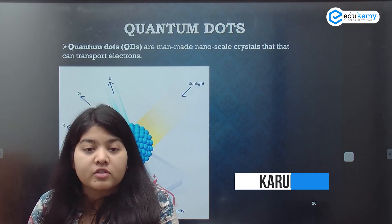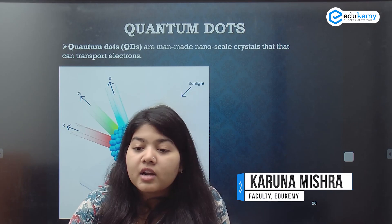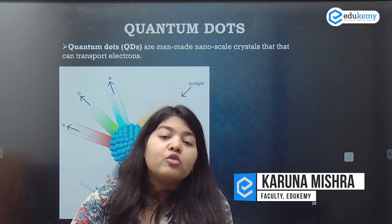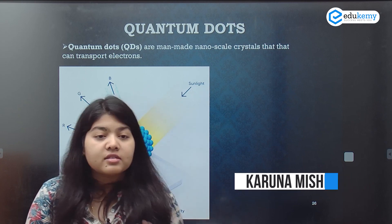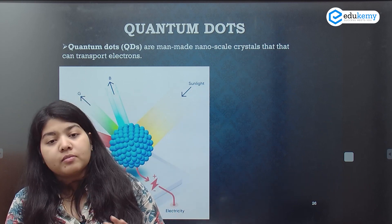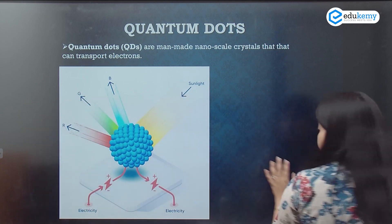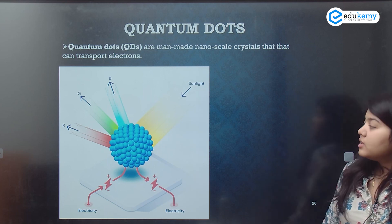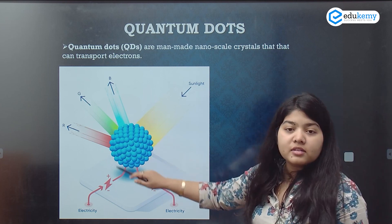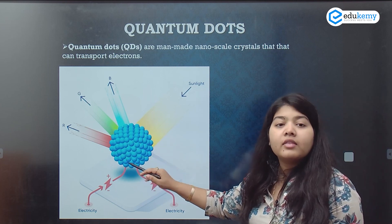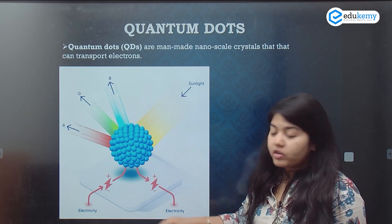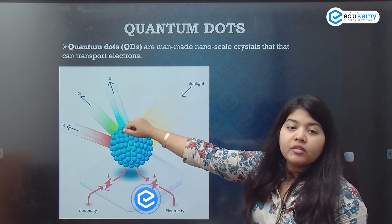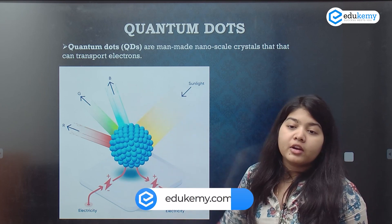Quantum dots are these beautiful man-made nanoscale crystals that can transport electrons. So, what are quantum dots? These are man-made crystals that can transport electrons. If I supply electricity, then it can give out electrons.